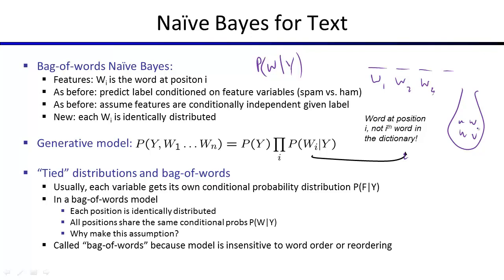For topic classification like Google News — sports, politics, technology — scrambling the words doesn't change the topic. An article about iPad, iPhone, Apple is still technology even when scrambled. But if you're trying to decide whether something is well-formed English, like for machine translation, scrambling the words is a bad thing. When we talk about machine translation, I'll explain how people very much do not allow words to reorder randomly.